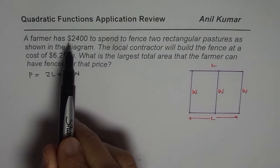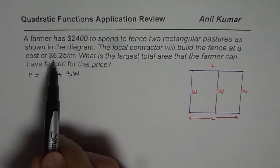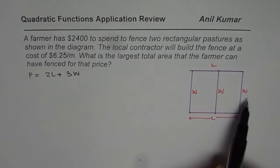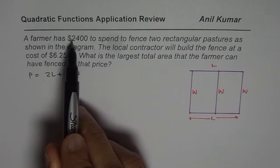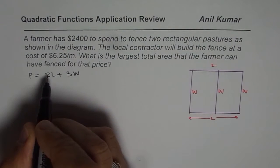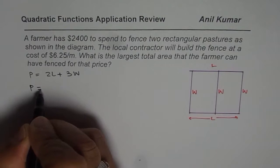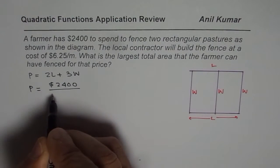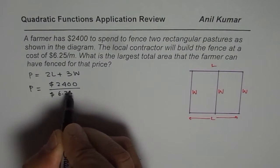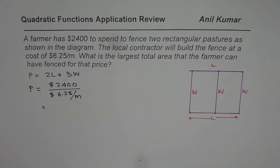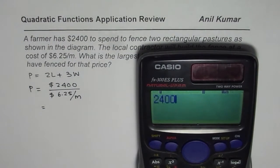The second part: we have a budget of $2400 and the rate is $6.25 per meter. Since the cost is per meter, we can find the maximum length of fencing. The maximum perimeter equals the budget divided by the rate: $2400 divided by $6.25.